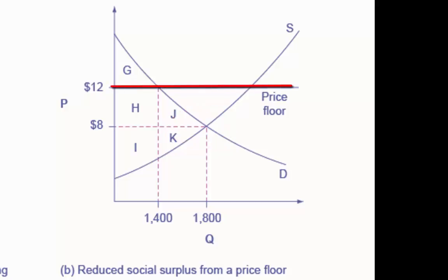A price floor is imposed at $12, which means that quantity demanded falls to 1,400. As a result, the new consumer surplus is G, and the new producer surplus is H plus I. In this case, J and K represent the deadweight loss of inefficiency in the market.